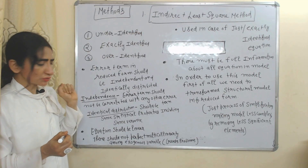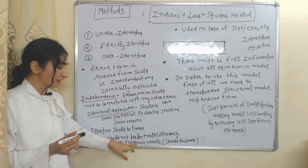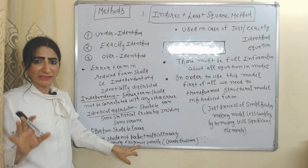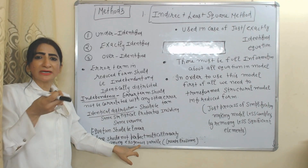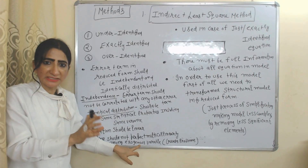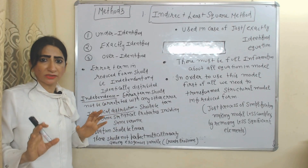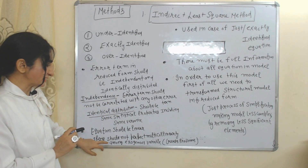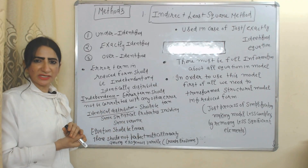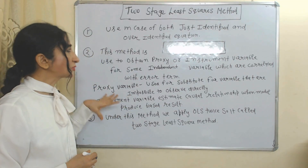Under Indirect Least Squares, there should be no perfect multicollinearity among exogenous variables — that is, the independent variables. No doubt independent variables may be correlated with each other, but there should not be high correlation, as high correlation can create many problems. So there should be no perfect multicollinearity among exogenous variables.